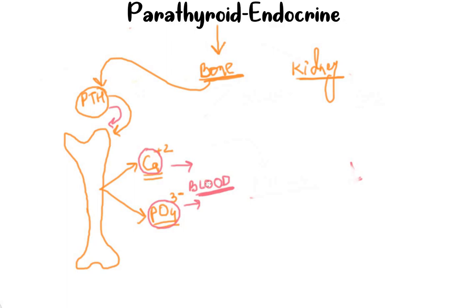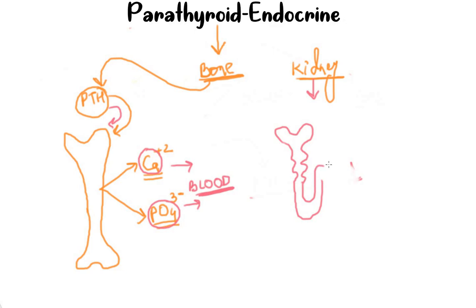Now let's see what happens when PTH acts on the kidney. Here is the kidney and the nephron: the PCT, the loop of Henle, the DCT, and the collecting duct. When PTH acts on the kidney it has three functions to perform.